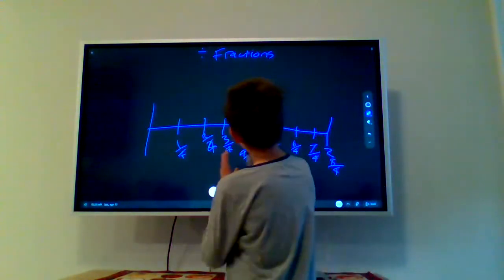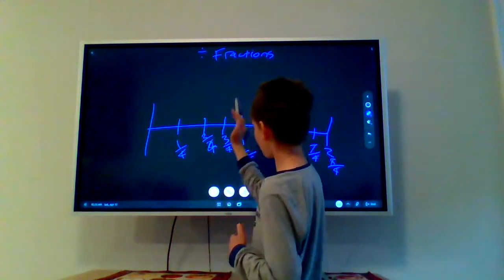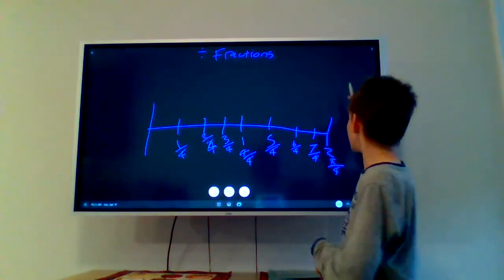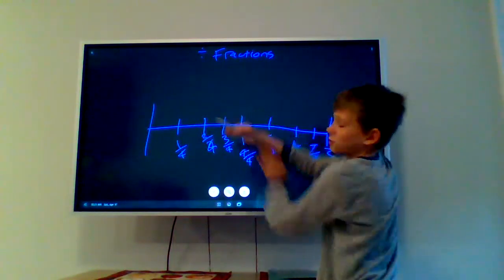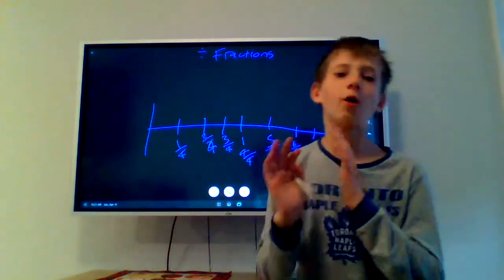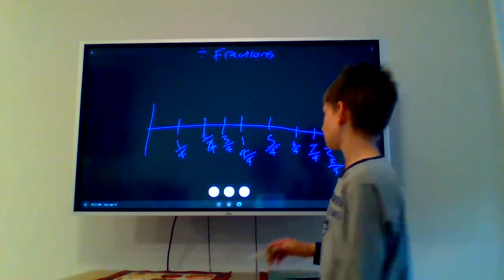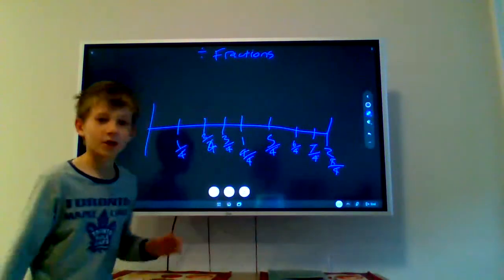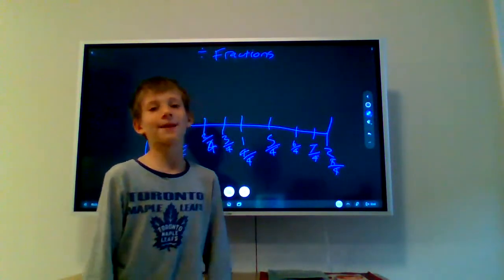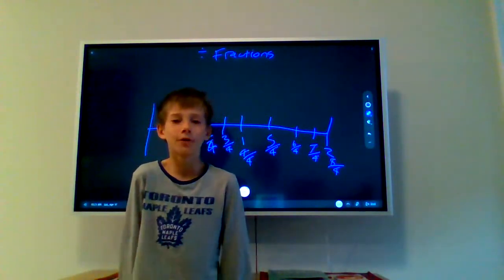Basically, anything up to the 4, anything up to, for this case, anything up to 3/4 is a proper fraction. That's what we call it. And then, once we hit 4/4, we call it a whole number. And then once we go on the other side, we call it improper, an improper fraction. And we can make an improper fraction into a mixed number.